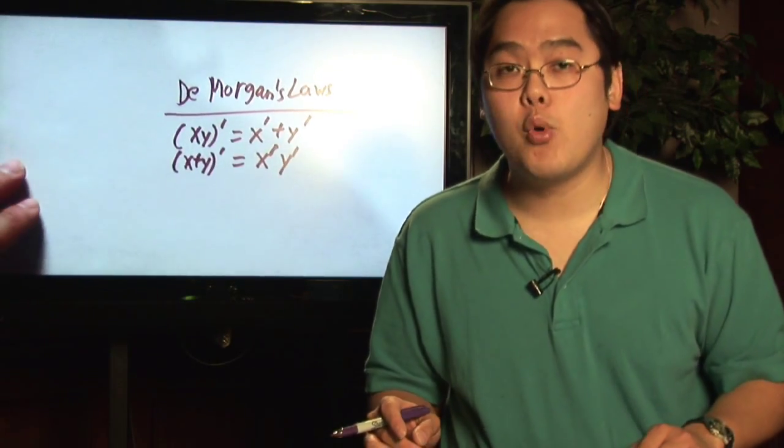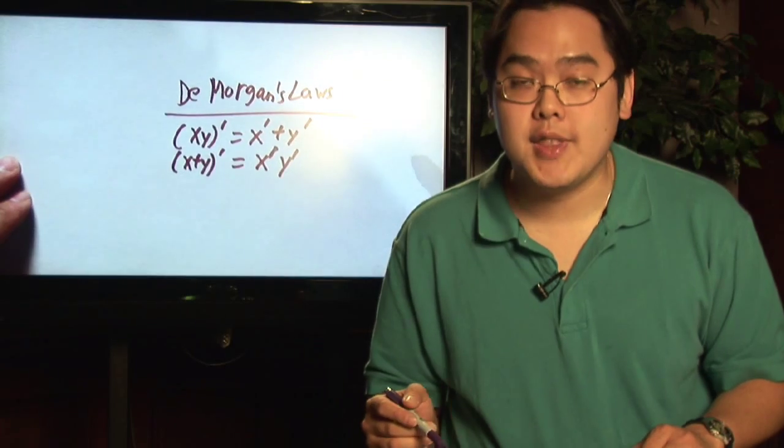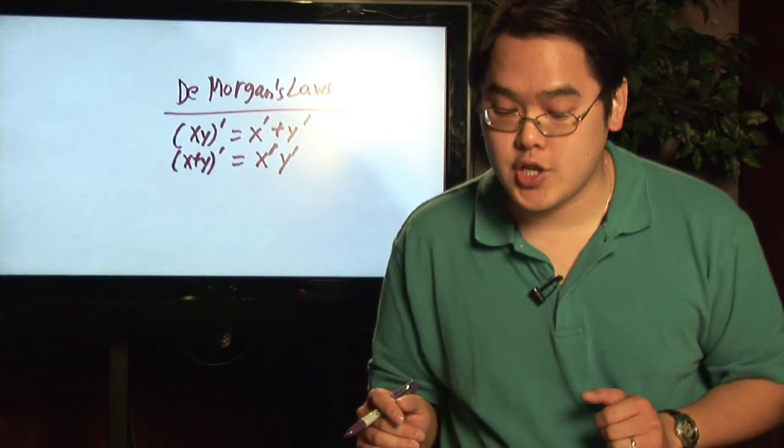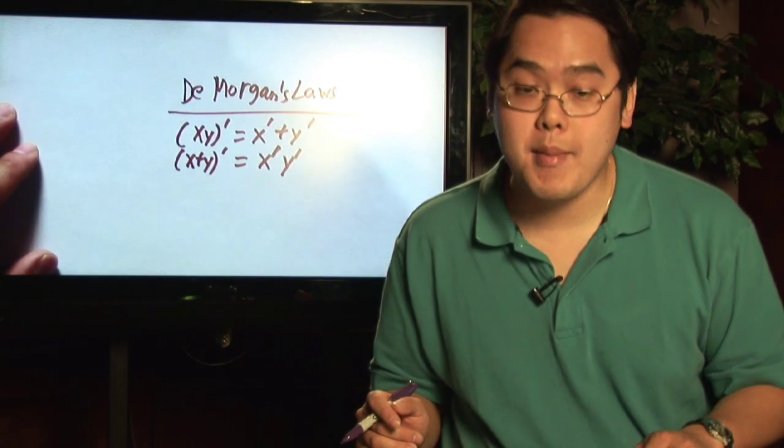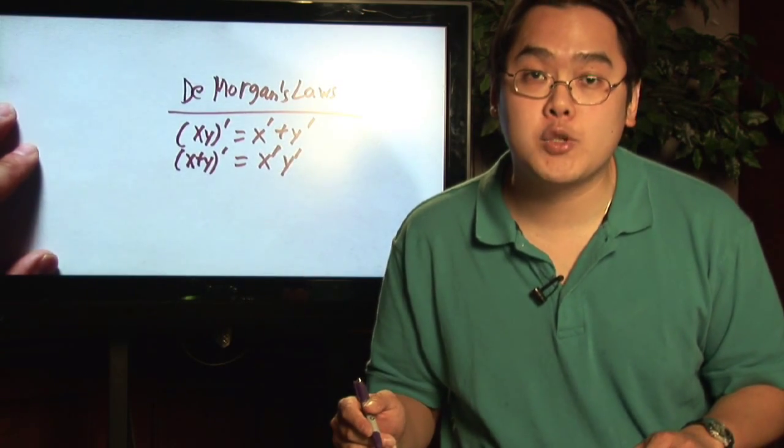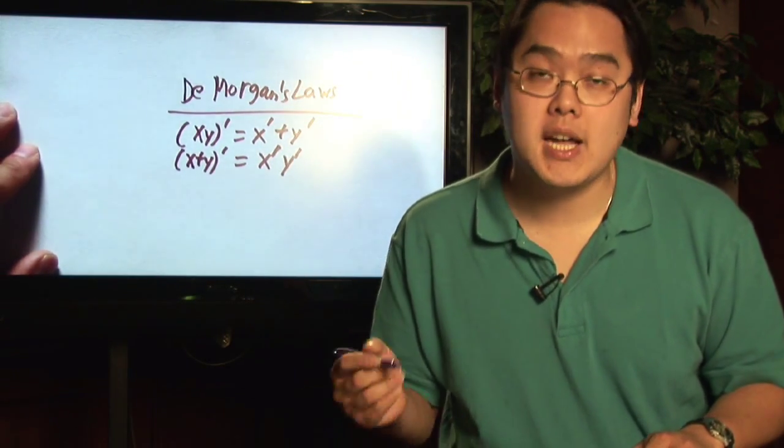And then you get to De Morgan's laws where you have the prime of X times Y becomes X prime plus Y prime and the prime of X plus Y gives you X prime times Y prime.